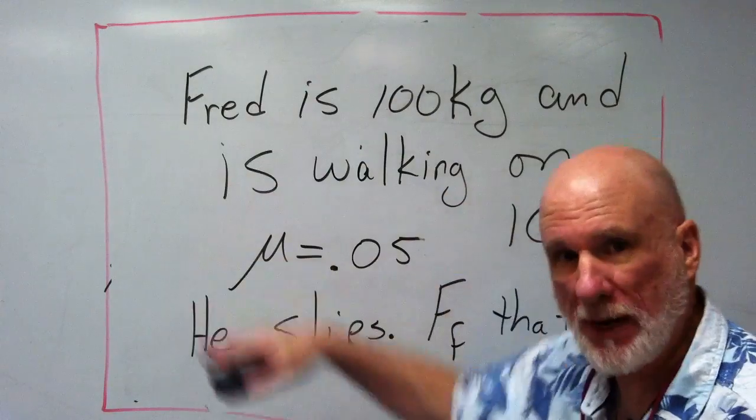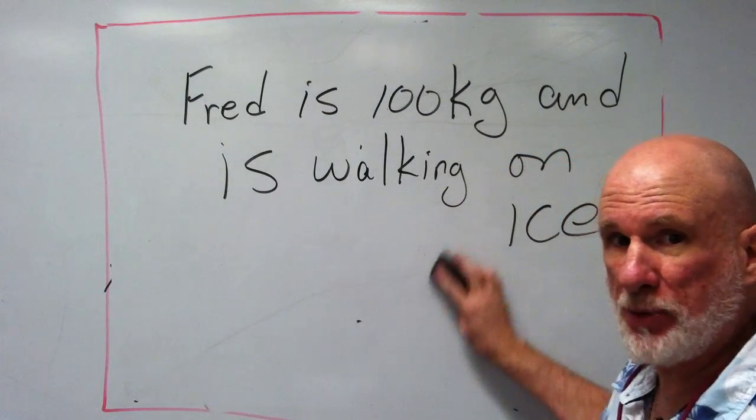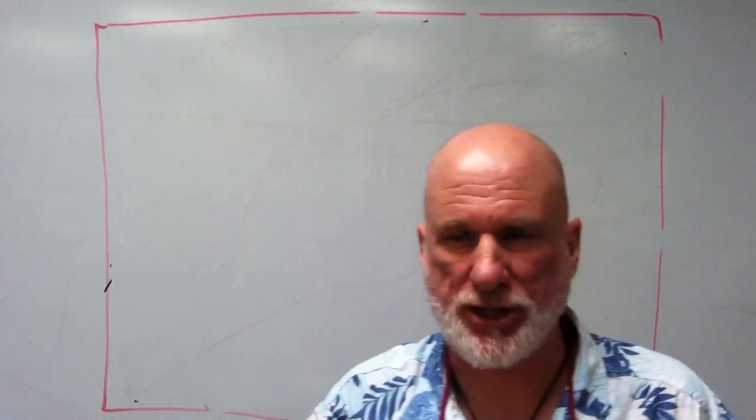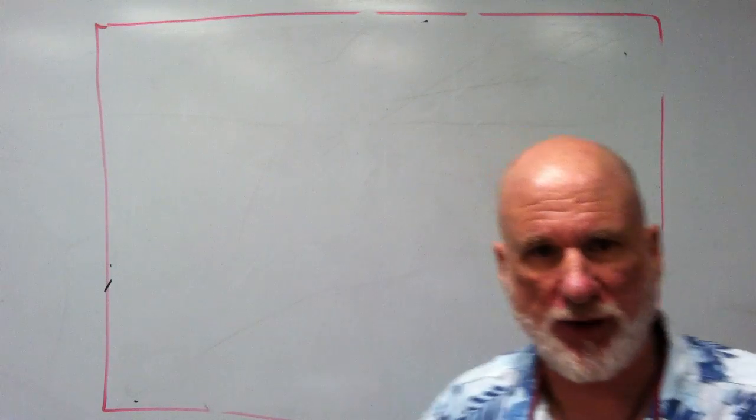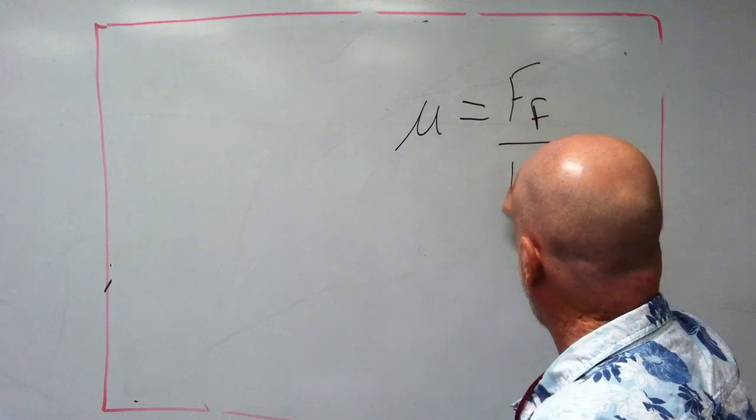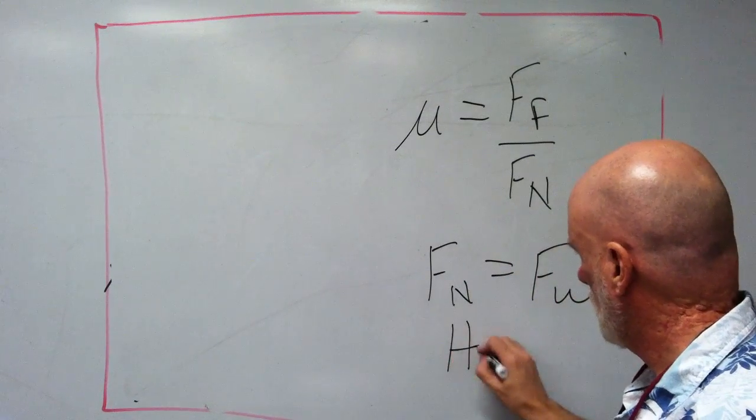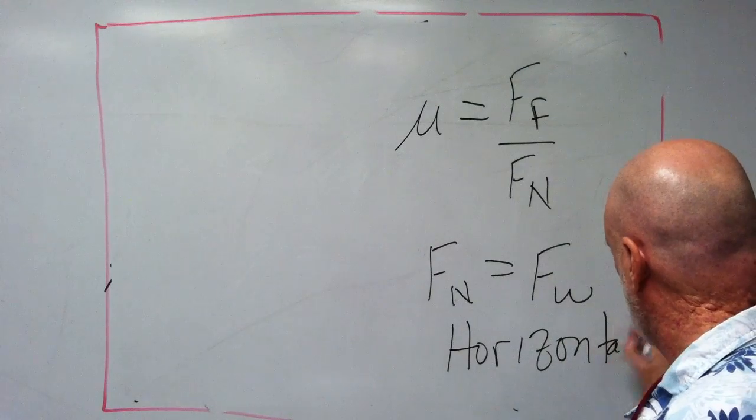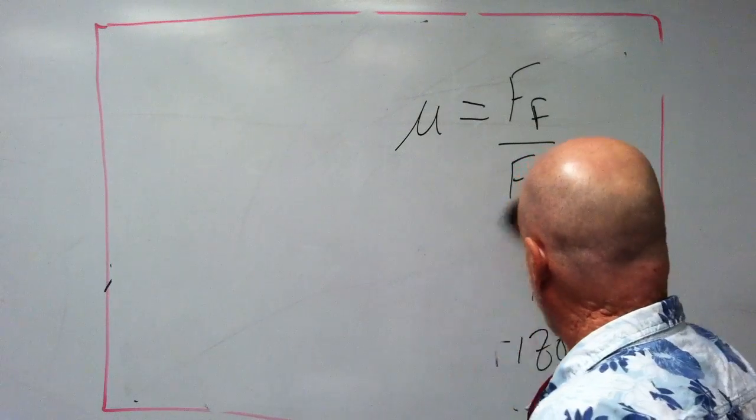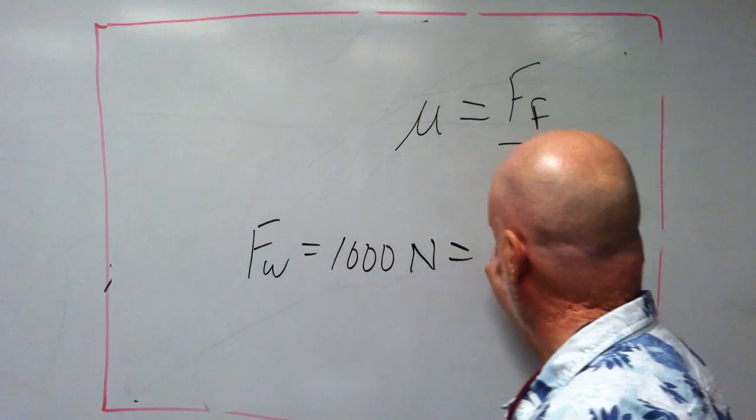All right, so let's erase some of this. Okay, so we want to know what friction actually brings him to a stop, what saves him. There's going to be some friction no matter how small the coefficient of friction is. Let's look at the coefficient of friction. We know that that's going to be mu equals Ff over Fn, and we know that Fn equals Fw on a horizontal plane. They're equal, so it's the weight. We know that Fw equals 1000 newtons, which equals Fn.